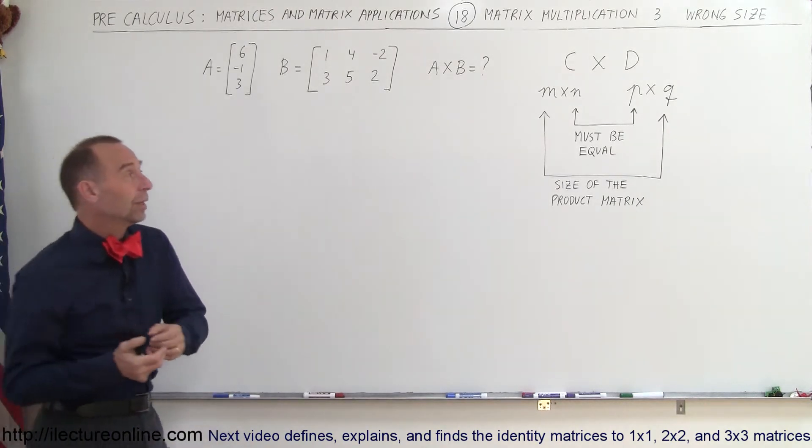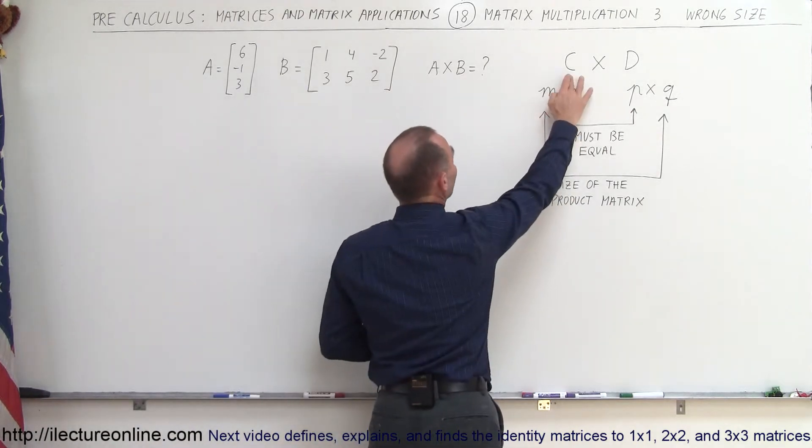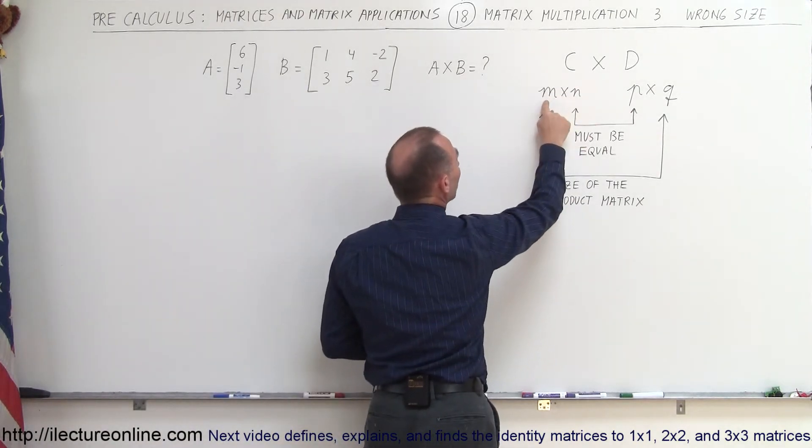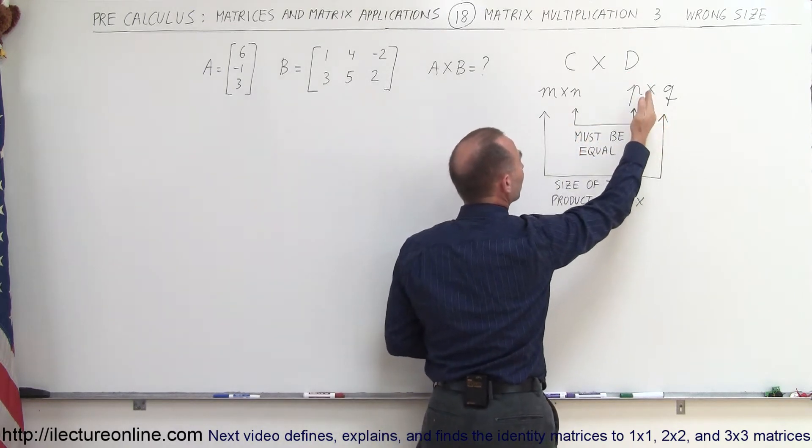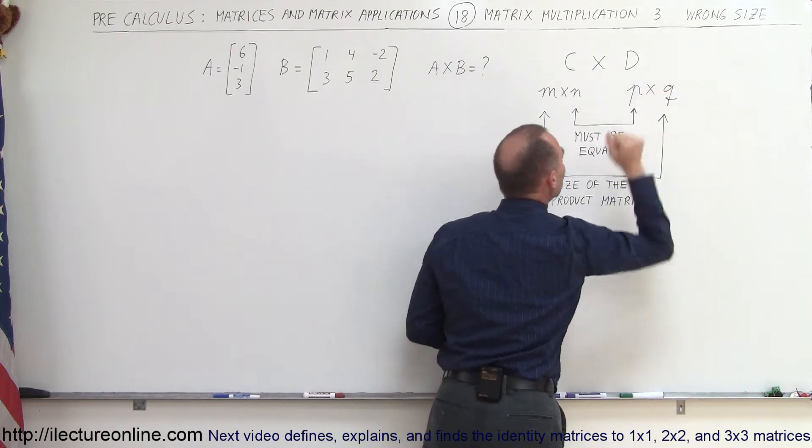So again, the rule is that you have two matrices: one matrix C that has dimensions M by N, so N number rows, N number columns. Matrix D has dimensions P times Q, which means P number rows and Q number columns.